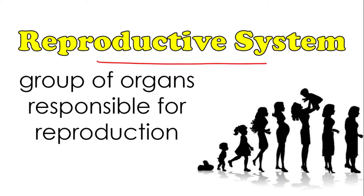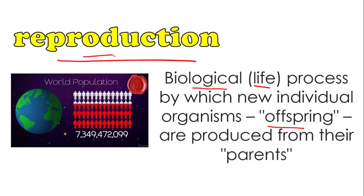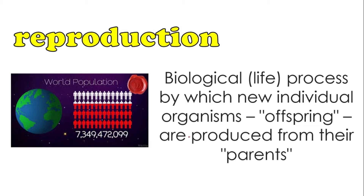What is the role of the Reproductive System? It is an organ system responsible for reproduction. What do we mean by reproduction? Reproduction is a biological process — biological means life — by which new individual organisms, or offspring, are produced from their parents. In short, reproduction is the process of creating new individual organisms. New individual organisms such as a baby or infant are called offspring.